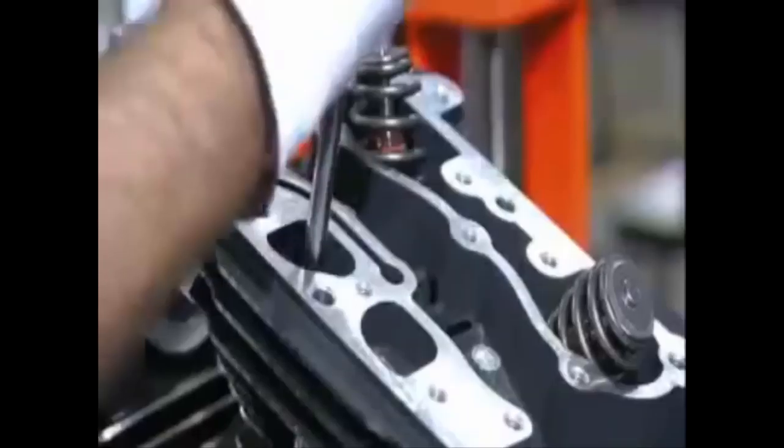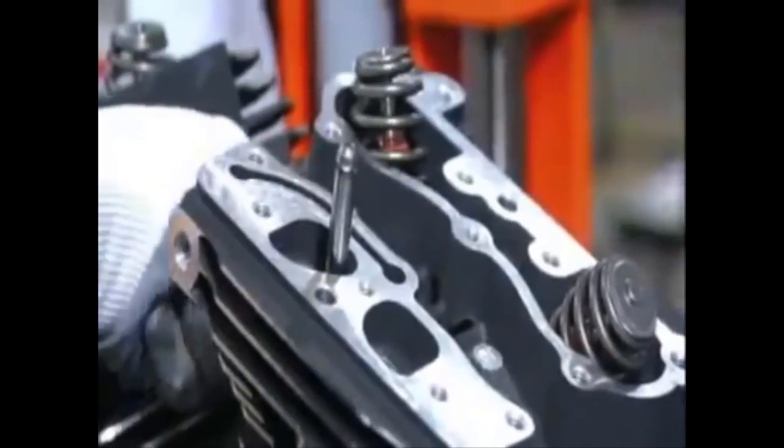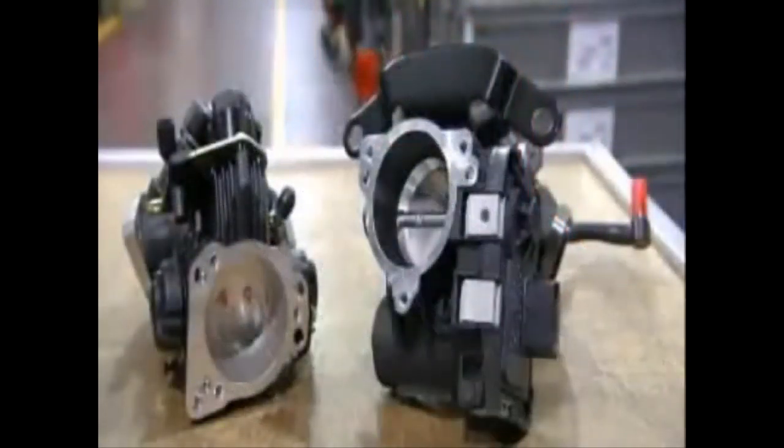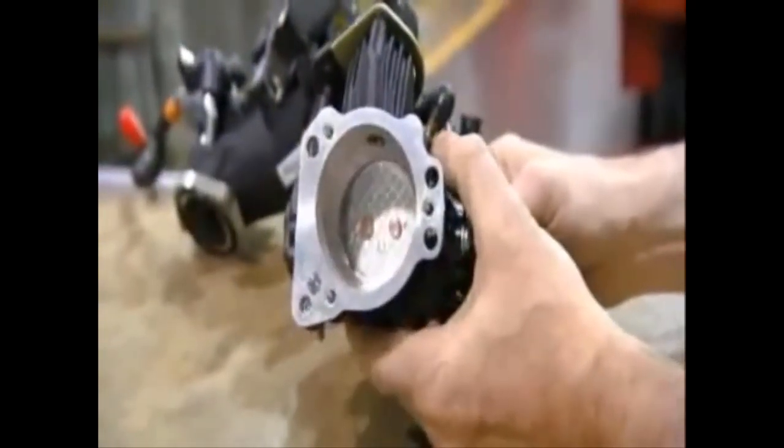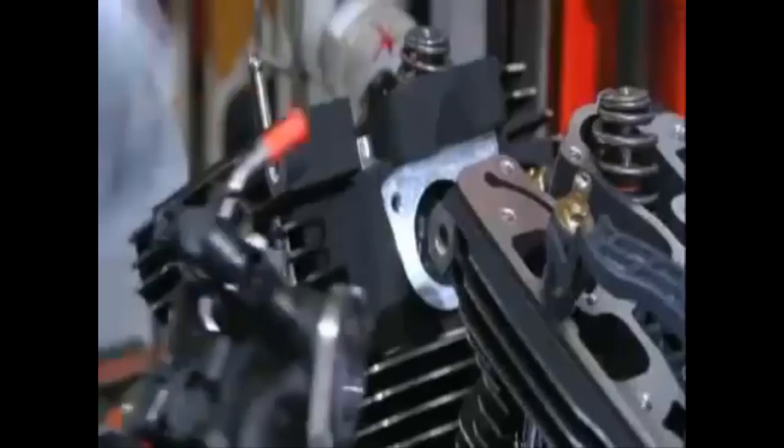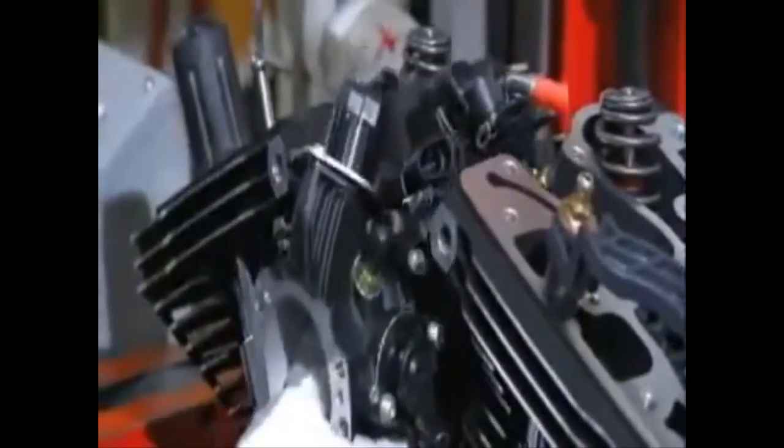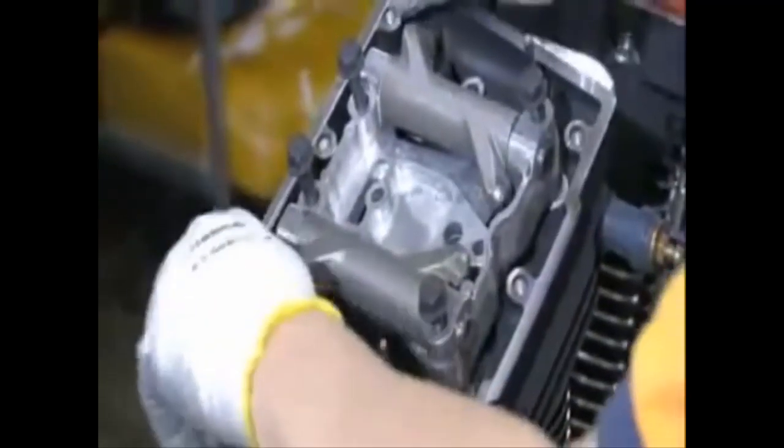He now inserts the push rods in the tubing. Up next is the electronic fuel injection system, which controls the flow of fuel to the engine. They install it between the two cylinders. He bolts the rocker boxes to the cylinder heads.